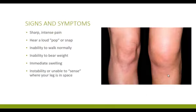Signs of an ACL tear include a loud pop or snapping sound and very sharp, intense pain at the moment of injury. Following this, there is likely an inability to walk normally and bear weight due to swelling and pain. You will also feel unstable and lose proprioception — your ability to sense where your leg is in space. For example, you can normally flex and extend your leg with your eyes closed and still know how your leg is oriented. This proprioception is often altered when you tear your ACL.